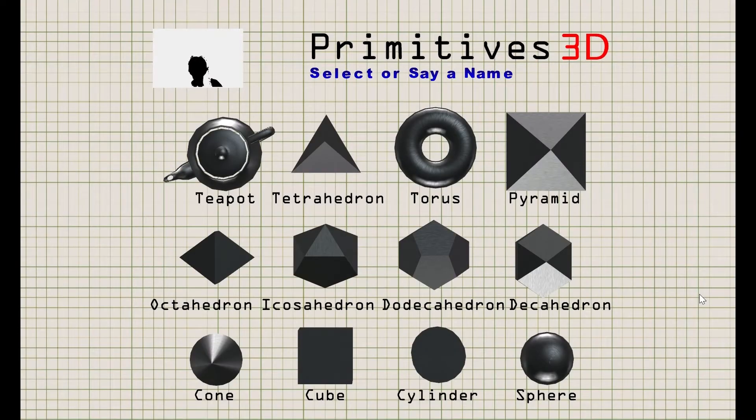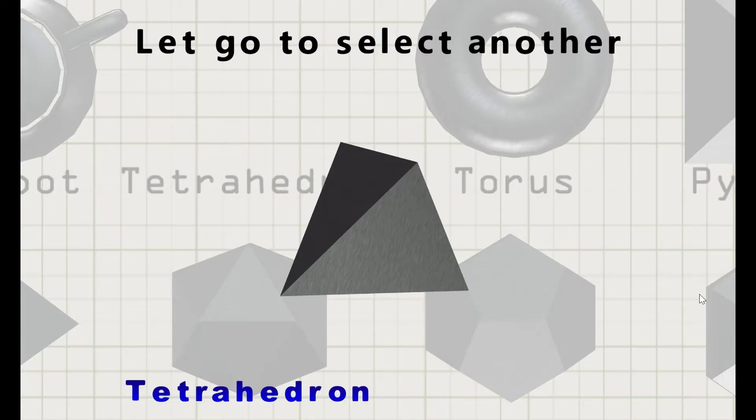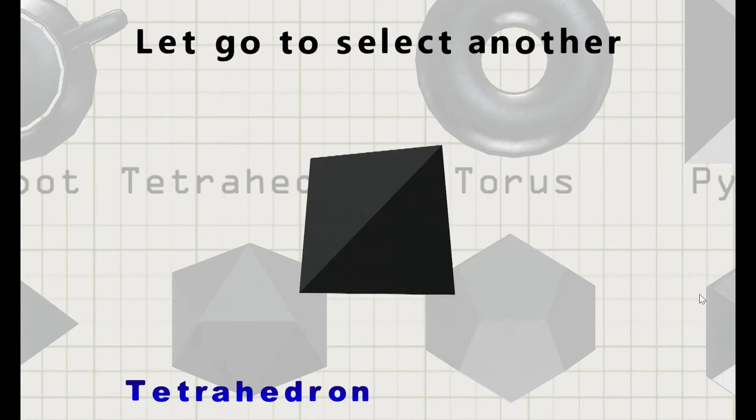Primitives 3D features a hands-free way to discover these objects. You can speak the name of each object to select it.